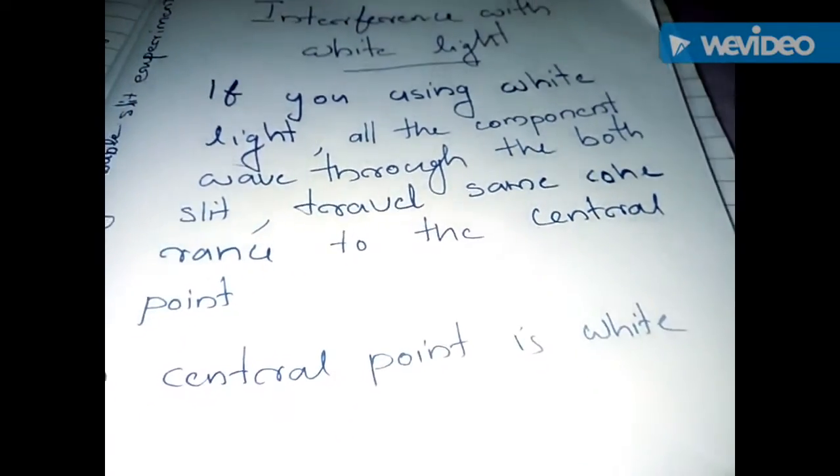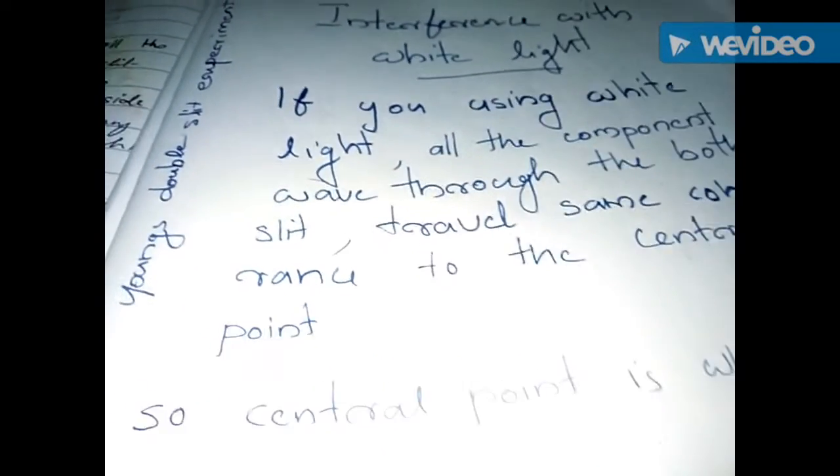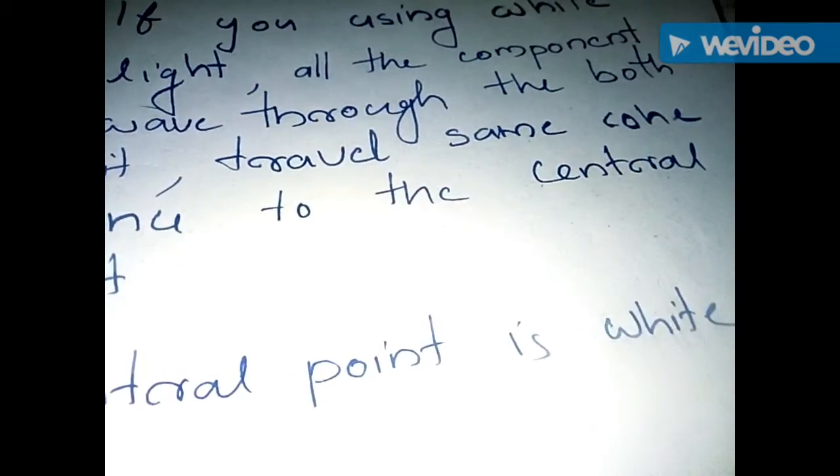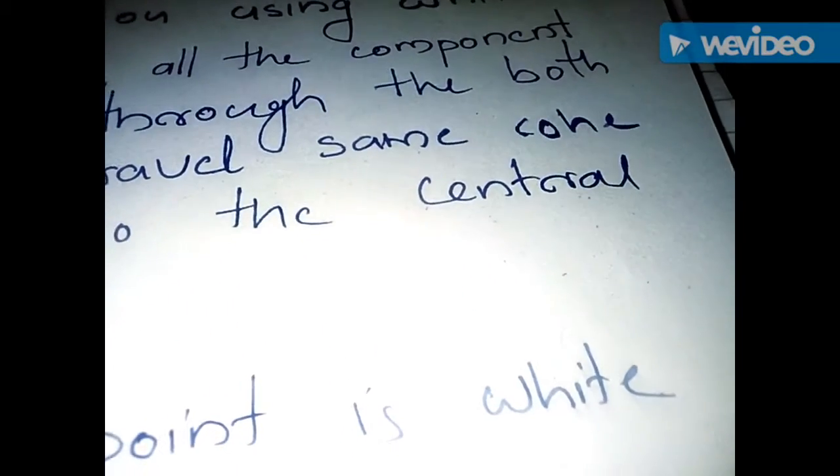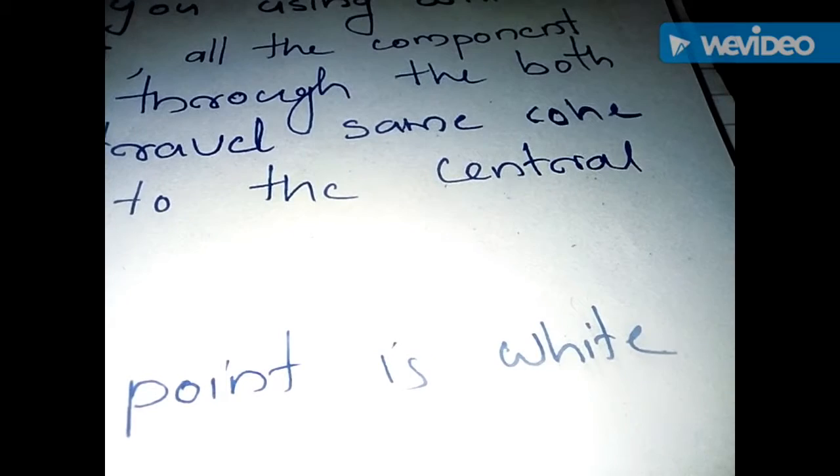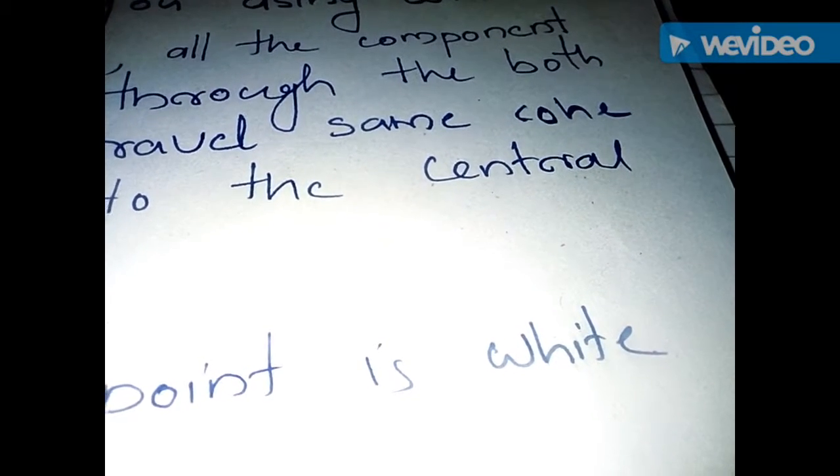The central point is white, and on both sides of this thin bright band, we can see many colored lights.